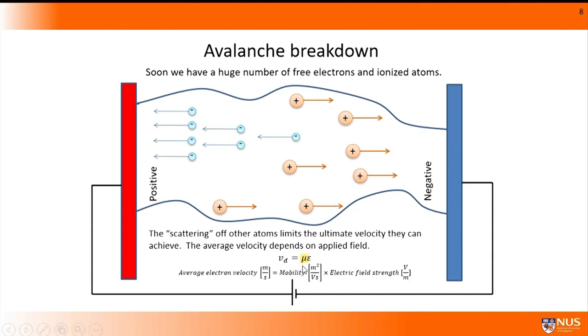This average velocity is called the drift velocity, and this velocity obviously depends on electric field strength. Everything else it depends on is lumped together in a term called the mobility. For example, in a gas, what I refer to as the mobility might depend on how dense the gas is. If we have a really dense gas, electrons aren't going to accelerate very much between collisions, and their average velocity will be lower than in a more rarified gas. Of course, the drift velocity also depends on the electric field strength. The stronger the field, the faster the electrons on average will move.